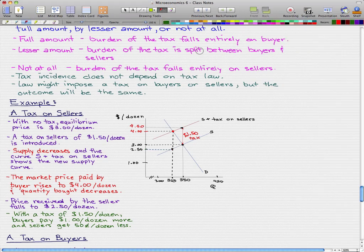Take a look here. We have our equilibrium price, which is $3 per dozen when there is no tax. We added a tax of $1.50, and that made a new supply curve, S plus tax on seller, which decreases the quantity bought.